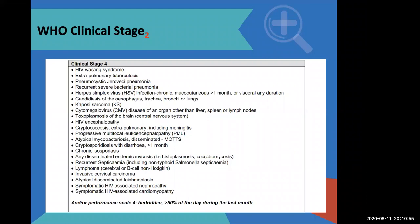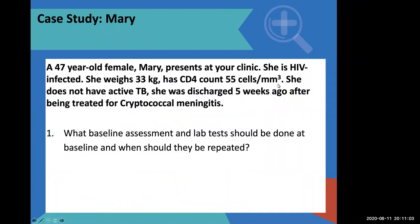So the correct answer around staging is that our patient is a WHO stage four patient. Mary is stage four. So now we know that she qualifies for ARVs. She is a WHO stage four patient. Then there's a question: what baseline tests should be done — what assessments and tests?